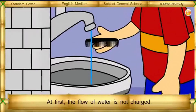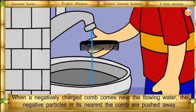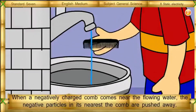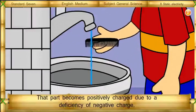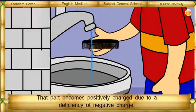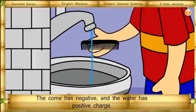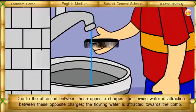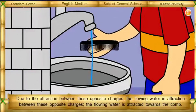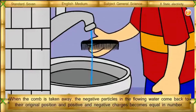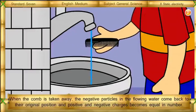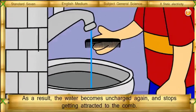At first, the flow of water is not charged. When the negatively charged comb comes near the flowing water, the negative particles nearest the comb are pushed away, and that part becomes positively charged due to the deficiency of negative charge. The comb has negative charge and the water has positive charge, so due to attraction between these opposite charges, the flowing water is attracted towards the comb. When the comb is taken away, the negative particles in the flowing water return to their original position, positive and negative charges become equal in number, and the water becomes uncharged again and stops being attracted to the comb.